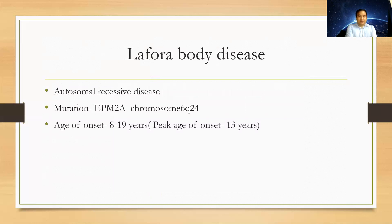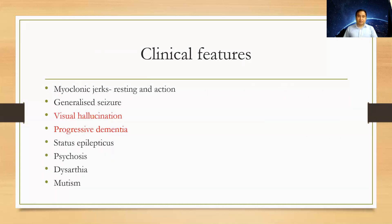Lafora body disease is an autosomal recessive condition. The mutation occurs in EPM2A on the short arm of chromosome 6, with age of onset 8 to 19 years and peak onset at 13 years. Clinical features include myoclonic jerks at rest and on action, generalized tonic or absence seizures, visual hallucinations — a typical feature — cortical blindness, progressive dementia, and sometimes status epilepticus.